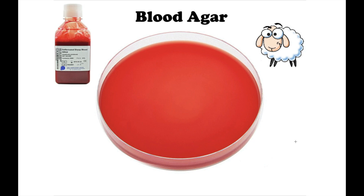Blood agar is a solid growth medium that contains red blood cells. The medium is used to detect bacteria that produce enzymes to break apart the blood cells. Blood agar contains general nutrients and 5% sheep blood.